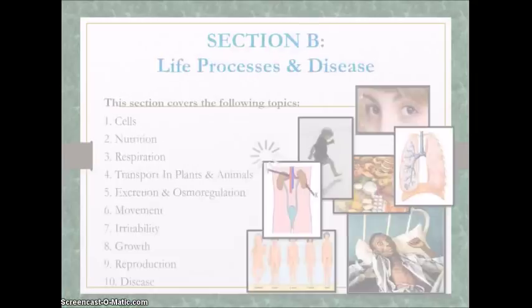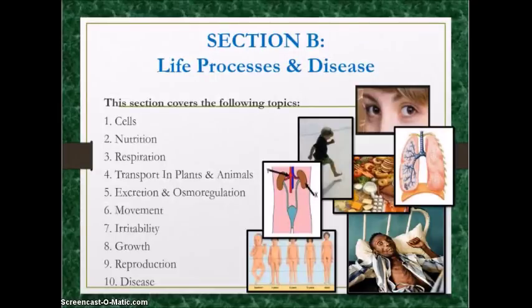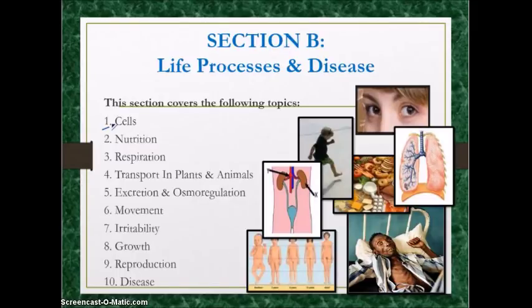Let's move on to Section B, which covers topics related to life processes and disease. The first topic is cells. You should know how to label plant and animal cells and bacterial cells, and know the differences among them in terms of the types of organelles — what they have in common and what is different. You should also know the cell transport processes of diffusion, osmosis, and active transport.